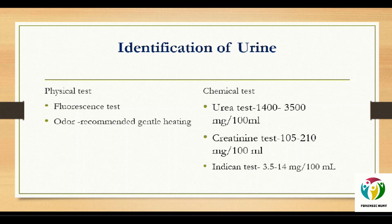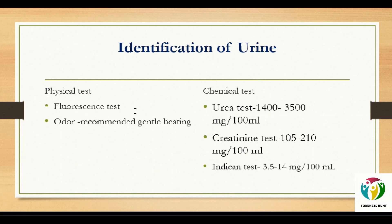Generally, for fluorescence testing of any body fluid, it is suggested to dry the sample prior to examination. However, there is an exception in the case of urine: depending on the composition and quantity of nutrient intake, certain compounds can be expelled which fluoresce in their liquid state. So for the fluorescence test of urine, you can take the sample in the liquid state itself instead of drying it before testing. The next characteristic feature is odor, which is recommended to assess following gentle heating.